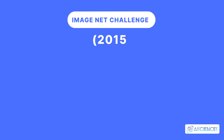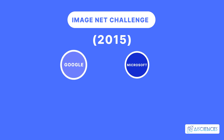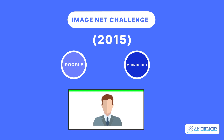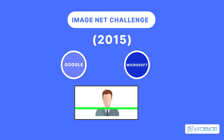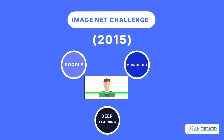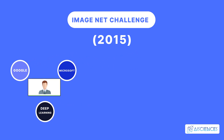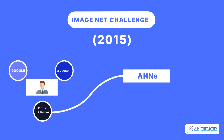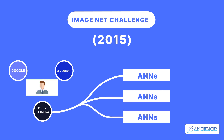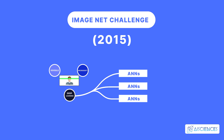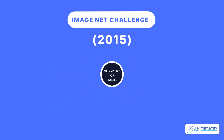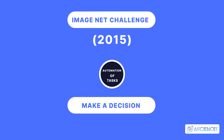ImageNet Challenge 2015: In 2015, Google and Microsoft developed machines that beat humans at image recognition. This major milestone was achieved at the 6th edition of the ImageNet Large-Scale Visual Recognition Challenge. Deep learning algorithms enabled the machines to beat humans at identifying images and objects in more than 1,000 categories. The algorithms were obtained from different versions of artificial neural networks (ANNs), and these algorithms imitated the human brain in the way they worked. This breakthrough resulted in the automation of tasks that require recognition of a person or object, and then making a decision on what to do next based on that recognition.